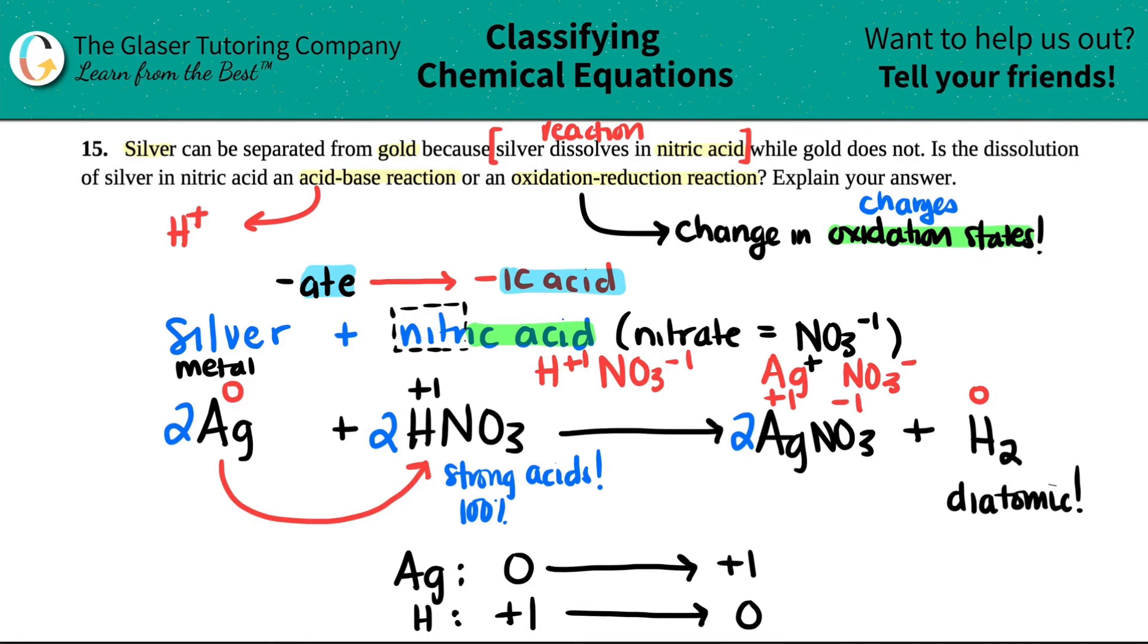In this case, the silver was going from a zero to a plus one. So that means that you lost electrons, just trying to give you a little bit more context. The hydrogen, on the other hand, since you became more in the negative region, you went from a plus one to a zero, you gained electrons.